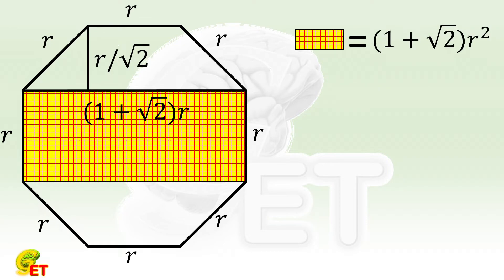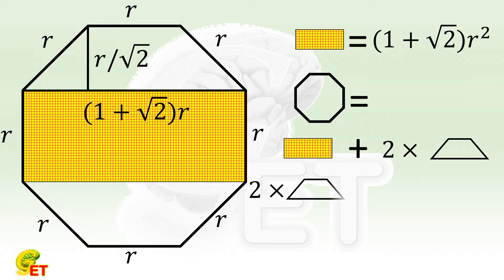The area of the octagon is equal to such a rectangle plus 2 trapezoids. And the total area of the 2 trapezoids equals the summation of 2 bases, r and 1 plus square root of 2 times r, times the height, r over square root of 2. So it is equal to 1 plus square root of 2 times r squared as well. So it is the same as the area of the rectangle.